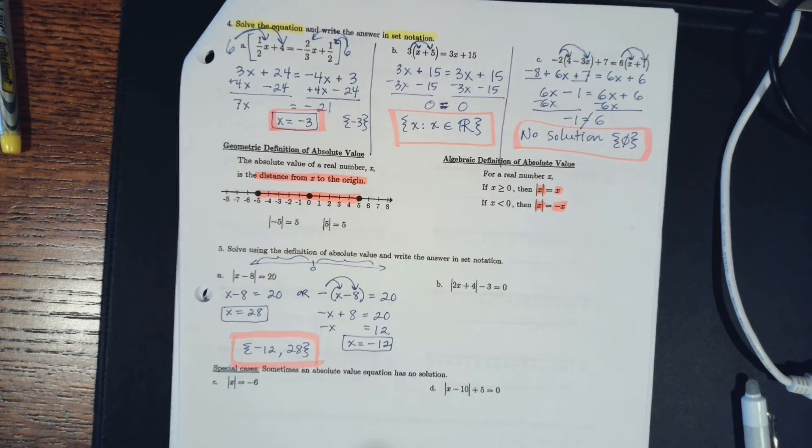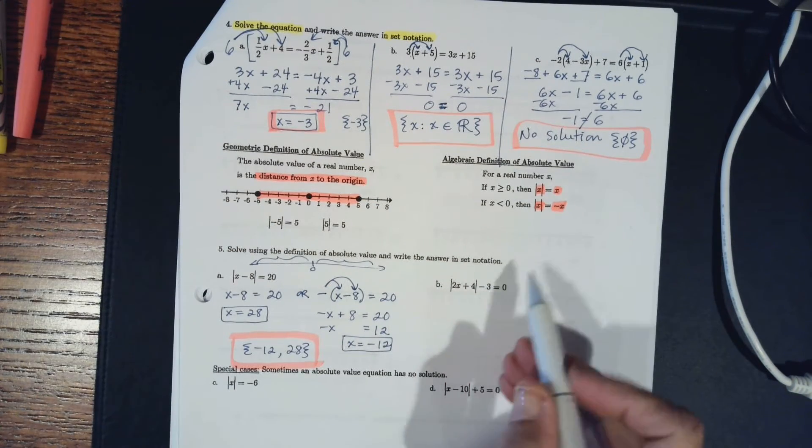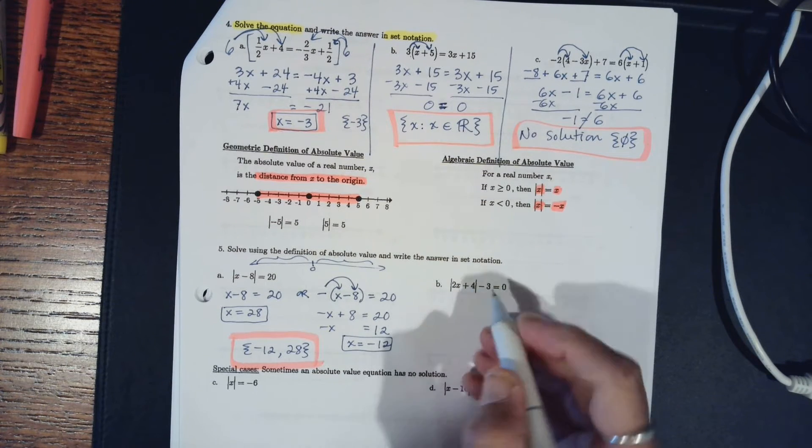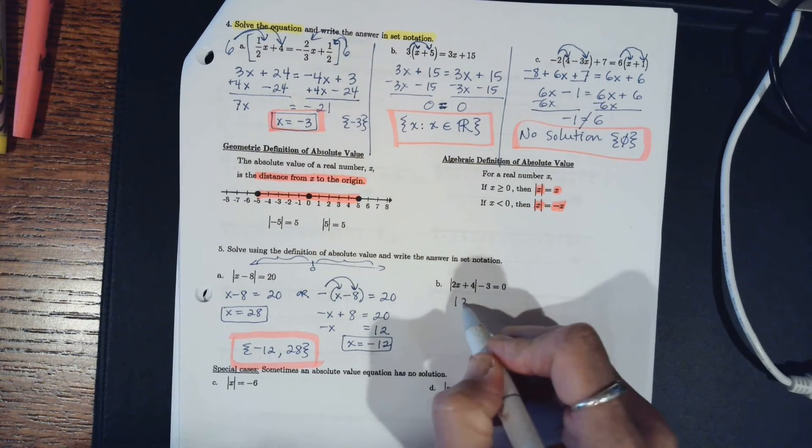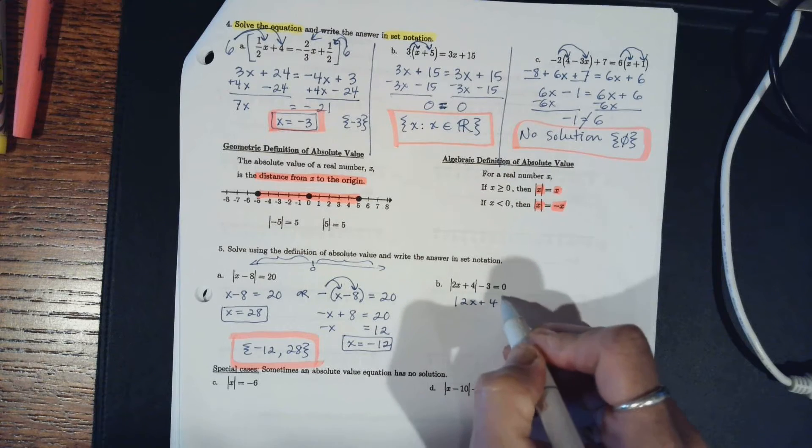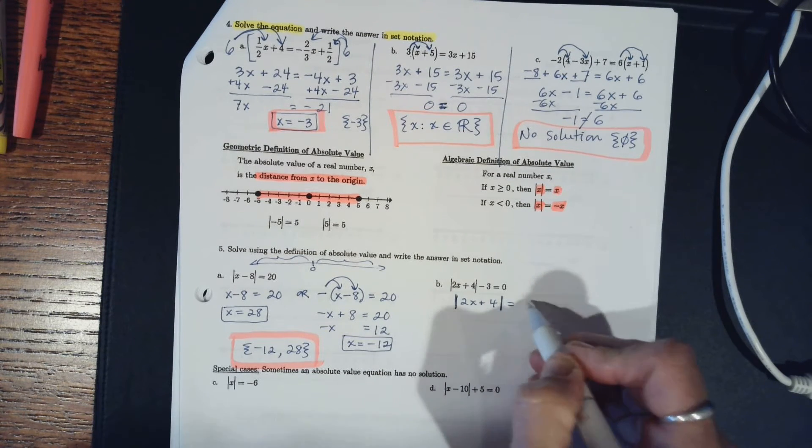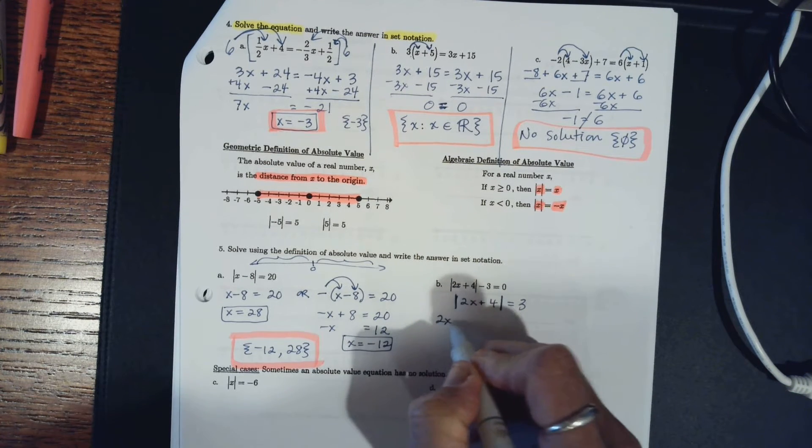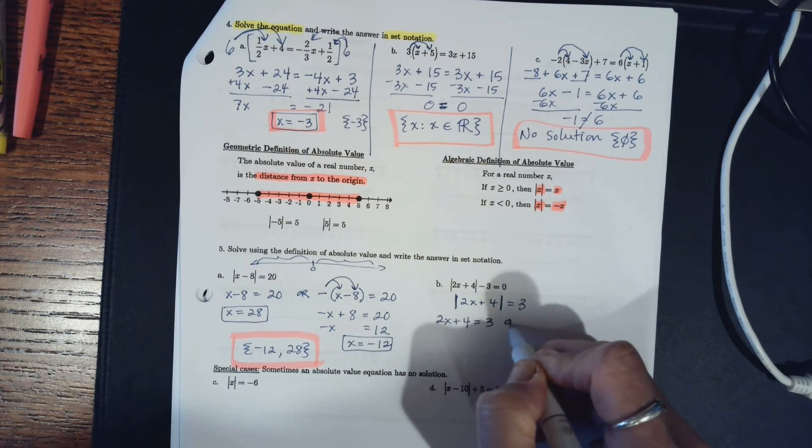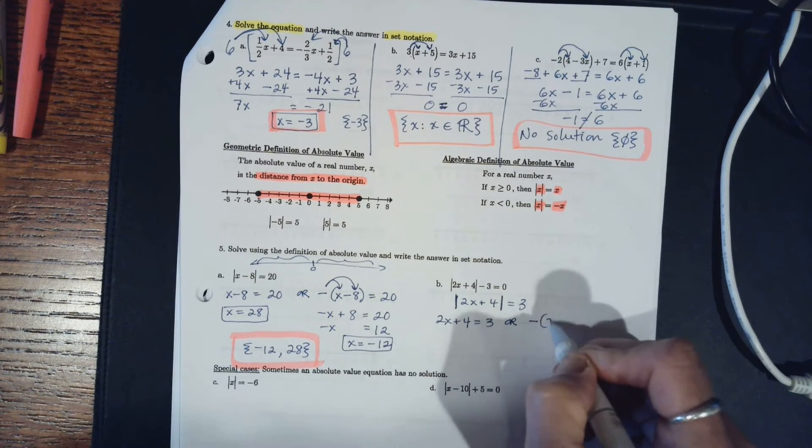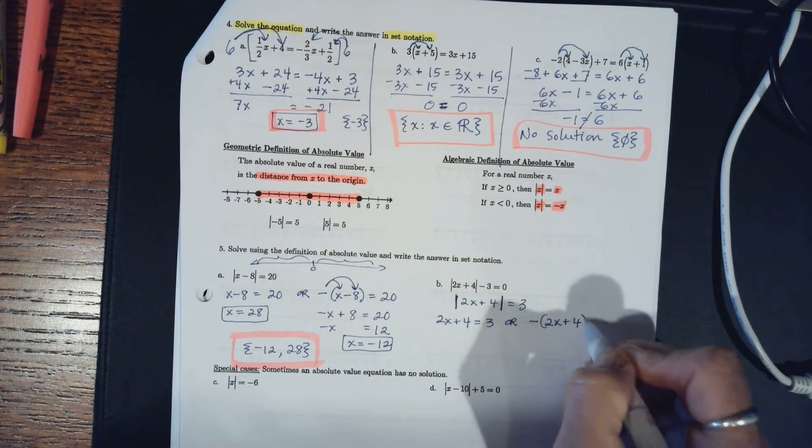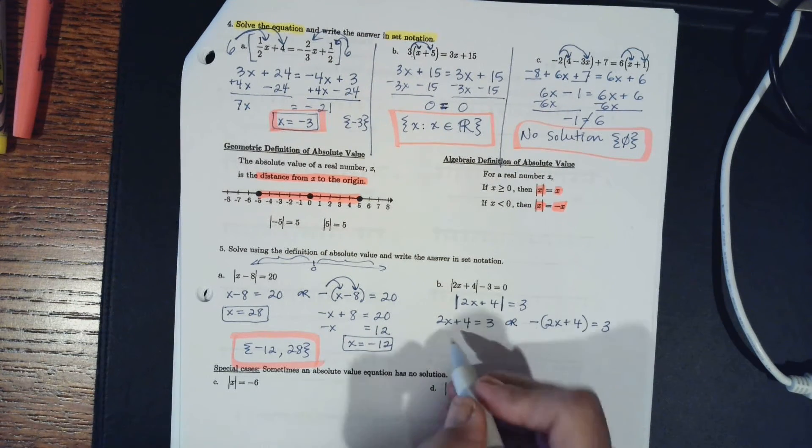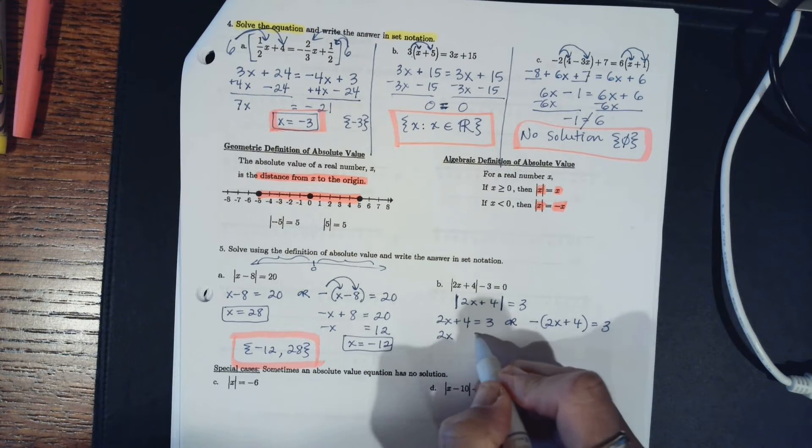You just write it as a set. For part B, what I'm going to do first is I'm going to add 3 because I want this absolute value thing alone, so it's actually equal to 2x plus 4 absolute value equals 3. And then I can write both of my equations, so 2x plus 4 equals 3, or the opposite of 2x plus 4 equals 3. Here I take away a 4 from both sides.